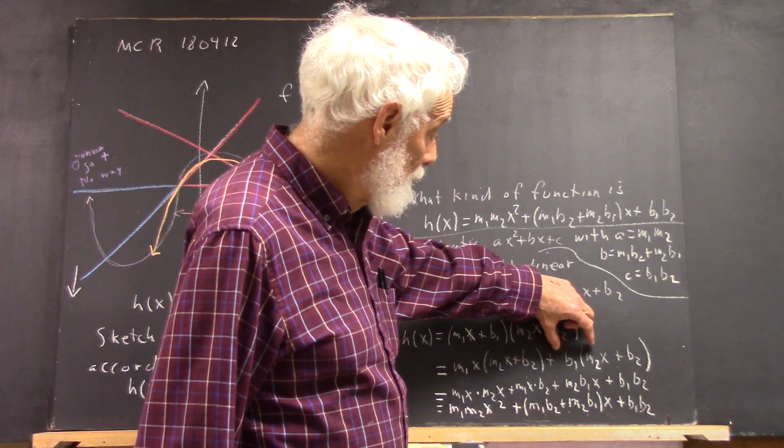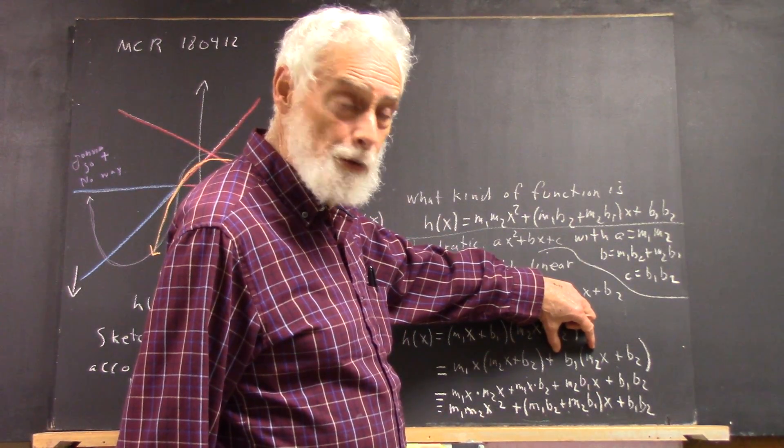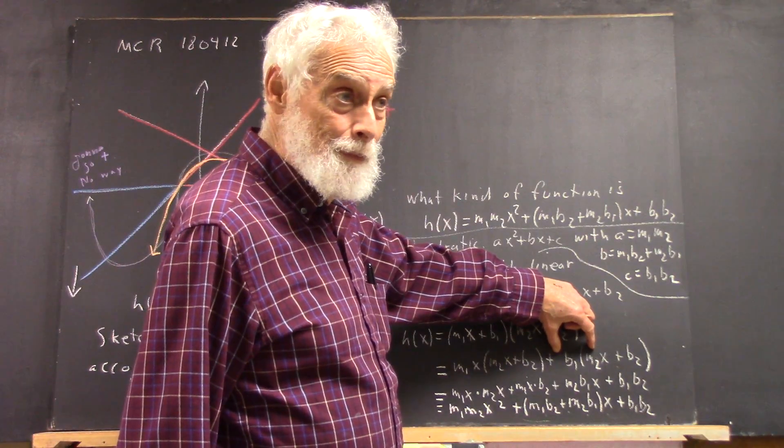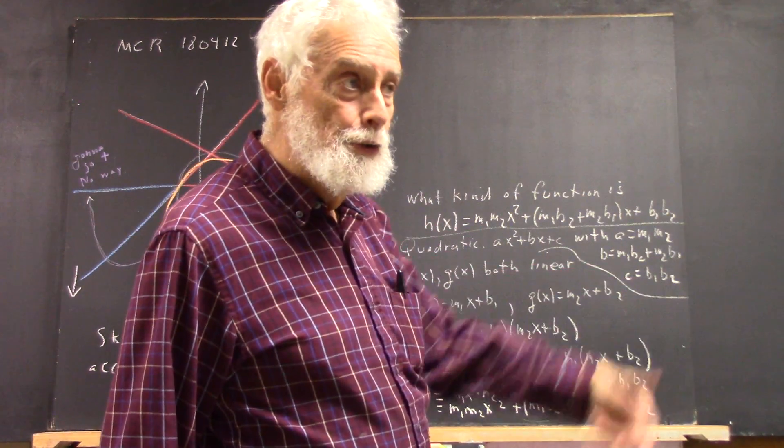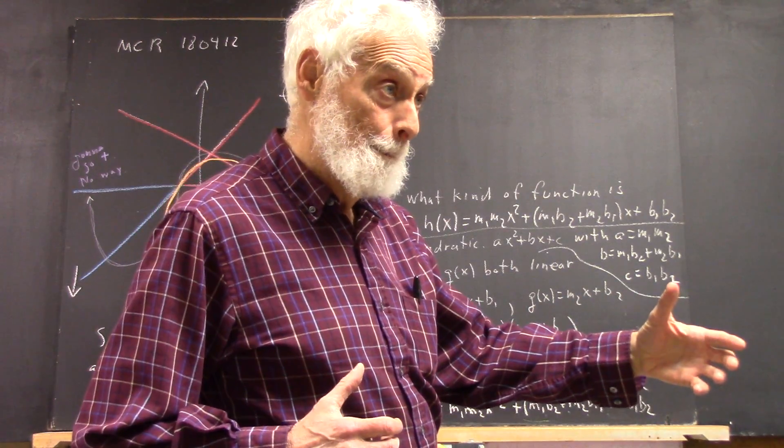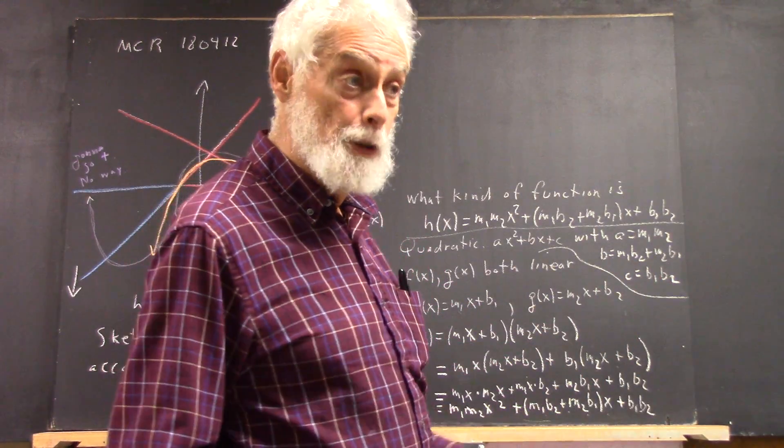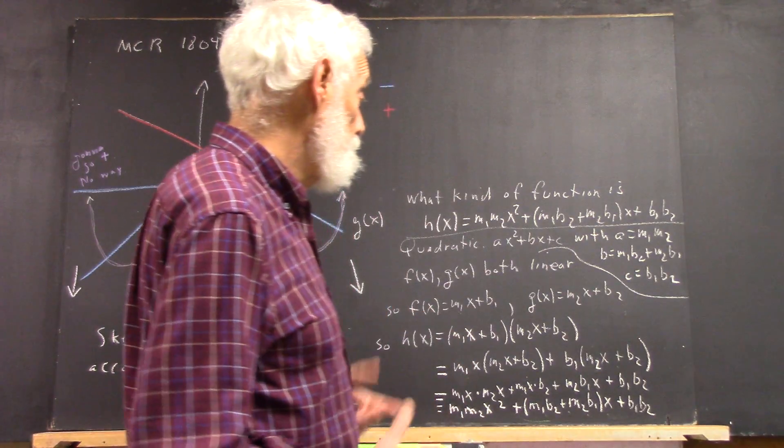I just skipped that commutative law step. Okay? I can always reverse the order of any two quantities that are multiplied, right? Because it doesn't matter which order you multiply. That's the commutative law.